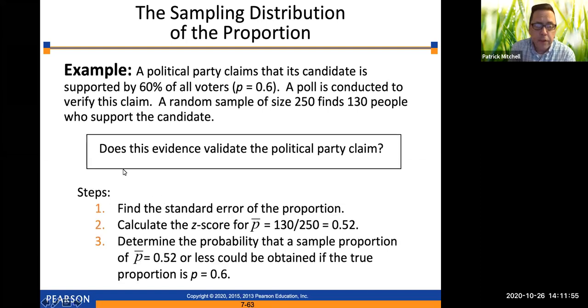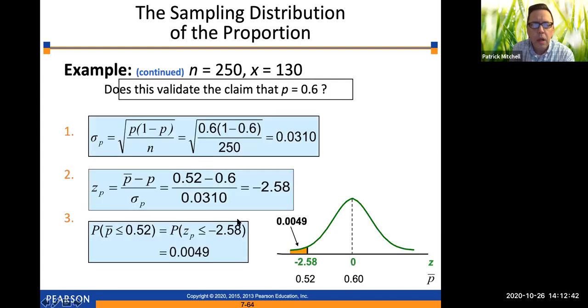So the steps to doing a problem like this are first find the standard error of the proportion and then calculate the z score for the sample proportion, which in this case is 130 divided by 250, which is 0.52. So notice that sample proportion is lower than what the political party is claiming it should be. But the question is, is it significantly lower? We probably wouldn't be surprised if it was like 0.58 or 0.59. And then finally determine the probability that a sample proportion of p bar, which is 0.52 or less, could be obtained if the true proportion is p equals 0.6.